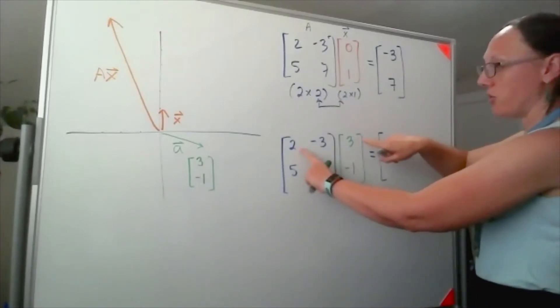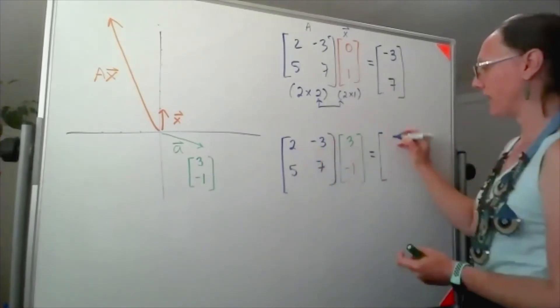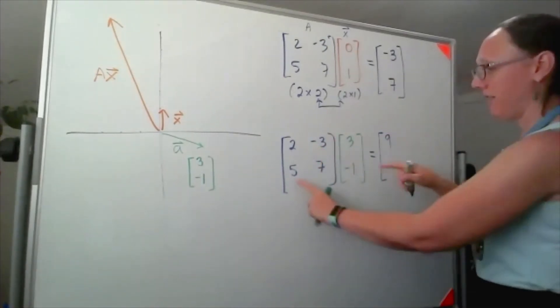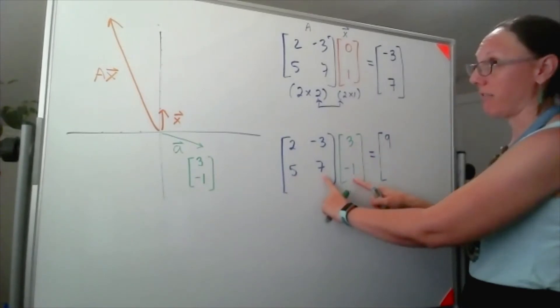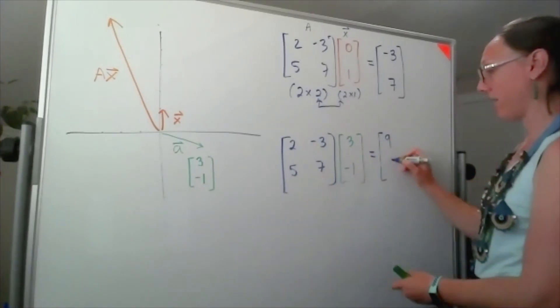So now I'm looking at 2 times 3, that's 6, plus another 3, that's 9. 5 times 3 is 15, but minus 7, 15 minus 7 should be 8.